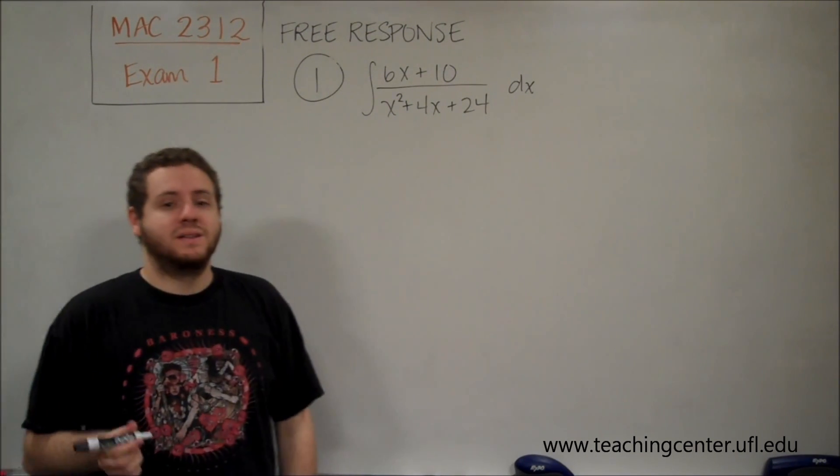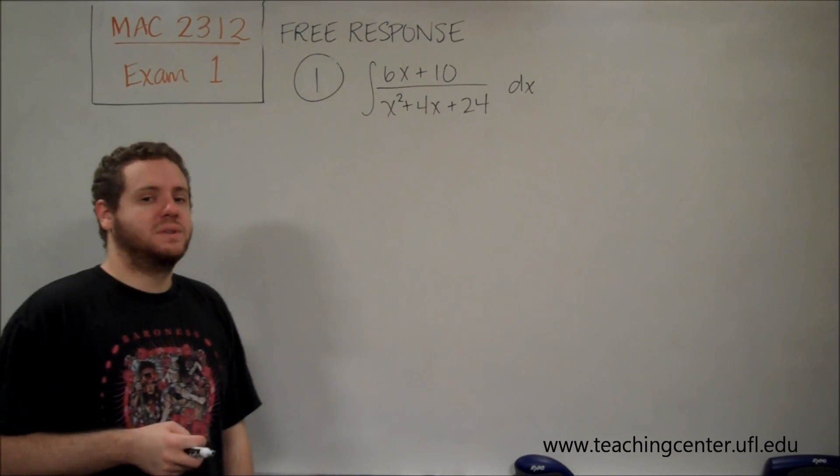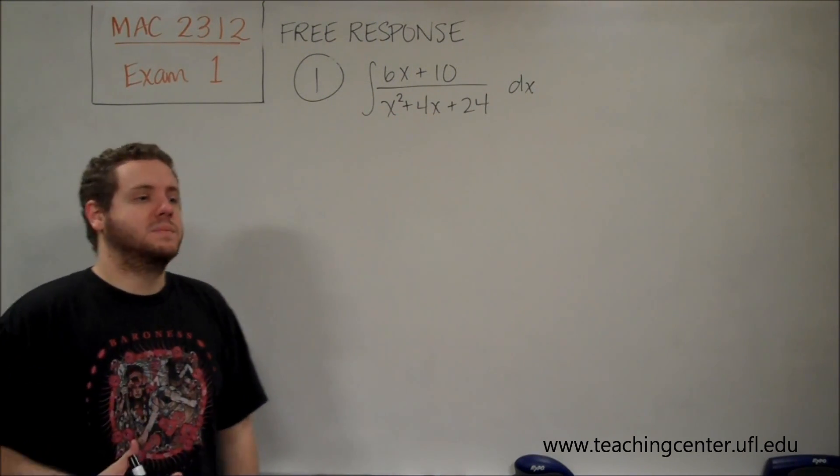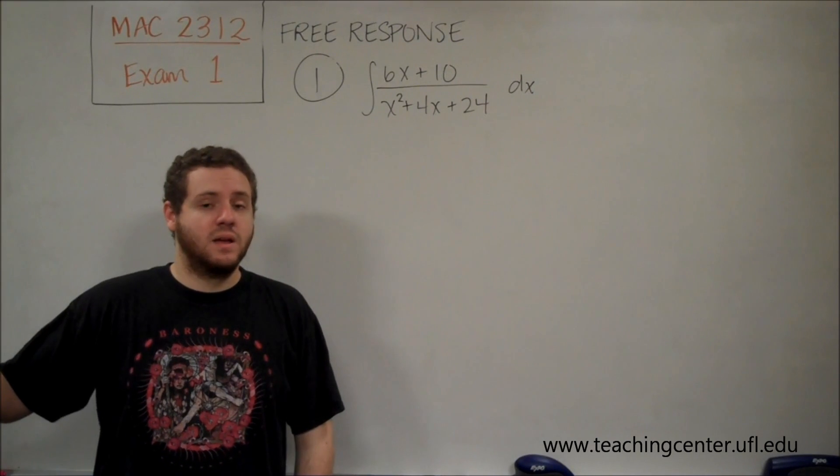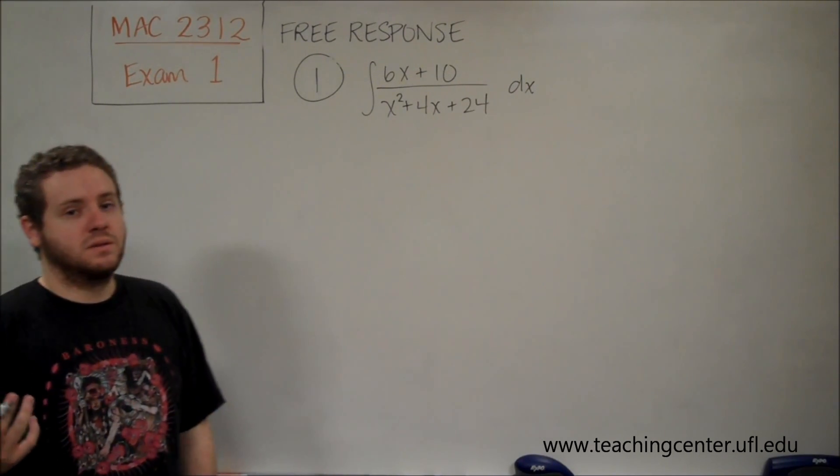So what we're going to have to do instead is complete the square on the denominator and try to split the fraction up. Typically when you do this, you're going to end up with one term that's some sort of ln and another term that's an arctangent. So let's try that here.